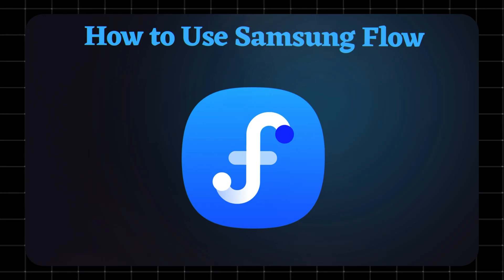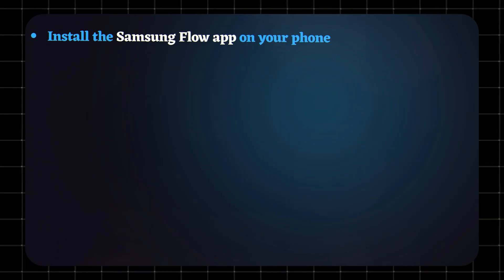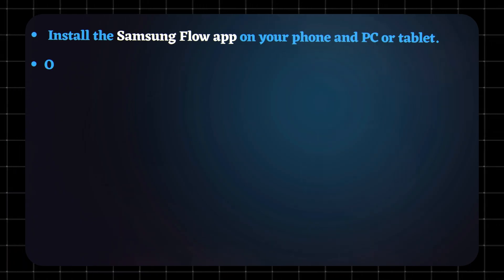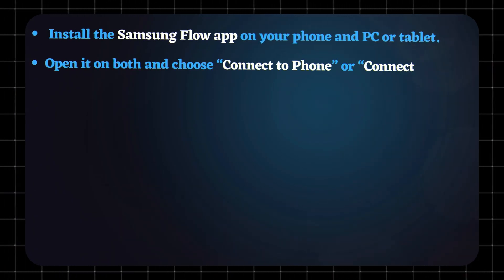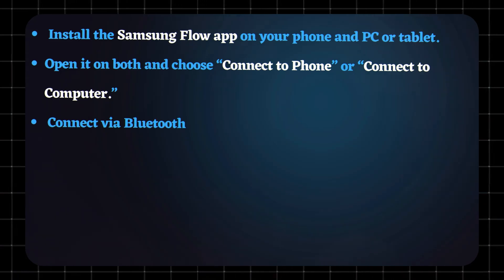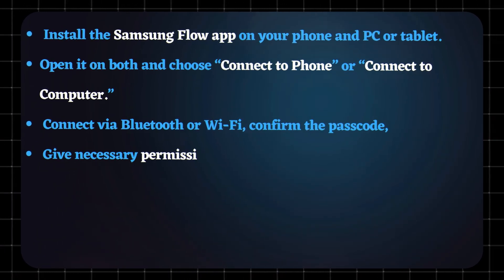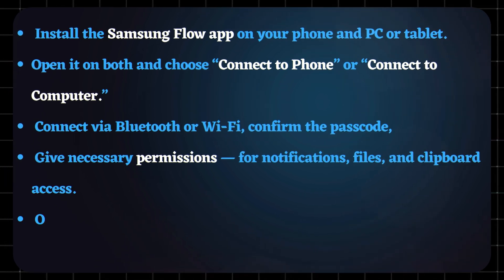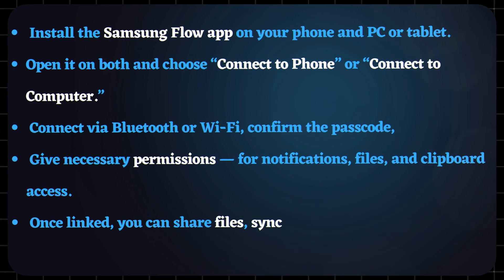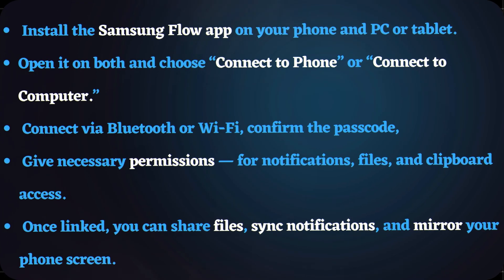Getting started is simple. Install the Samsung Flow app on your phone and PC or tablet. Open it on both and choose Connect to Phone or Connect to Computer. Connect via Bluetooth or Wi-Fi. Confirm the passcode. Give necessary permissions for notifications, files, and clipboard access. Once linked, you can share files, sync notifications, and mirror your phone's screen.